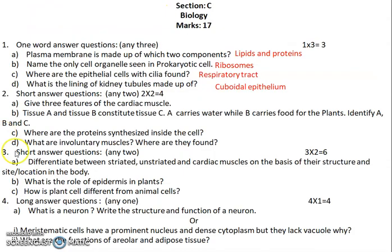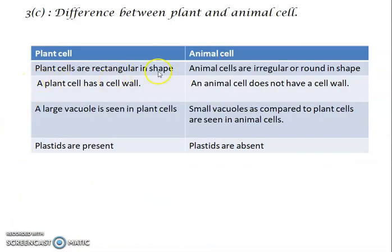Question 3c: how is the plant cell different from the animal cell? Plant cells are rectangular in shape while animal cells are irregular or round. Plant cells have a cell wall; animal cells do not. Plant cells have a large vacuole; animal cells have small vacuoles. Plastids are present in plant cells because they contain chlorophyll for photosynthesis, whereas plastids are absent in animal cells since they do not perform photosynthesis. You can also provide diagrams of plant and animal cells to support your answer.